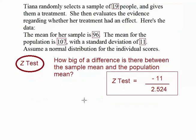Now at this point, that negative 11, that's the difference between the sample mean and the population mean. The 2.524, that's our standard error. It's much like a standard deviation, but it works for that distribution of sample means.